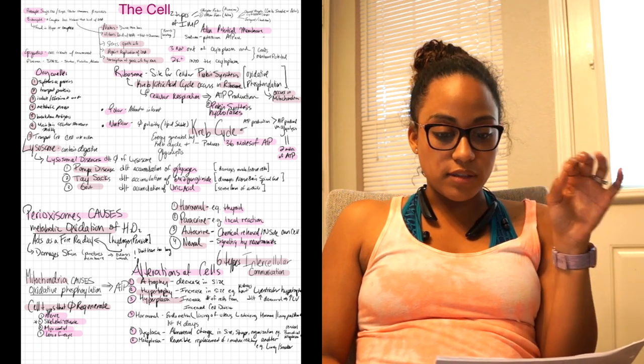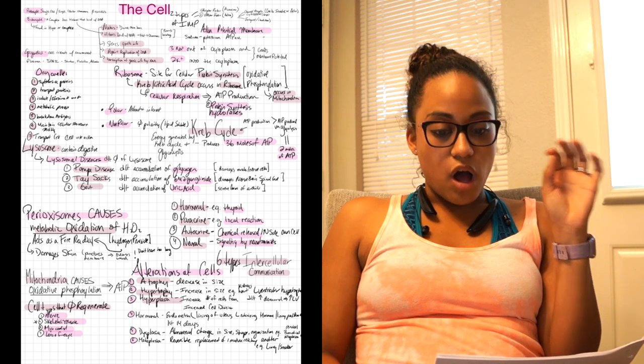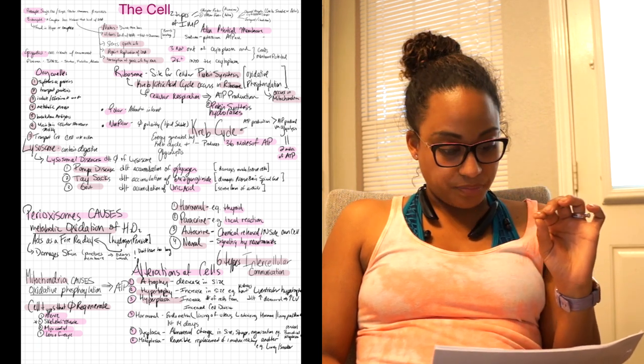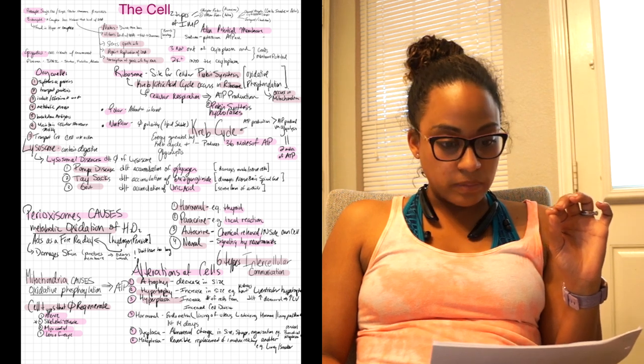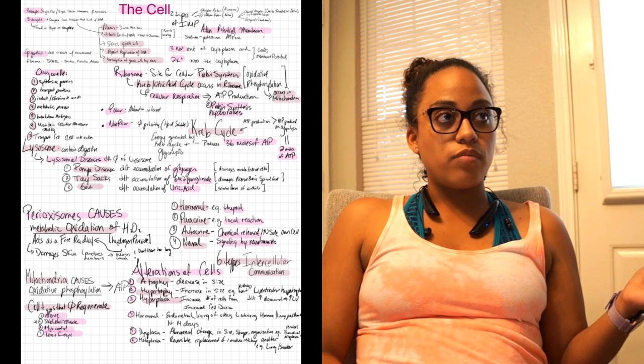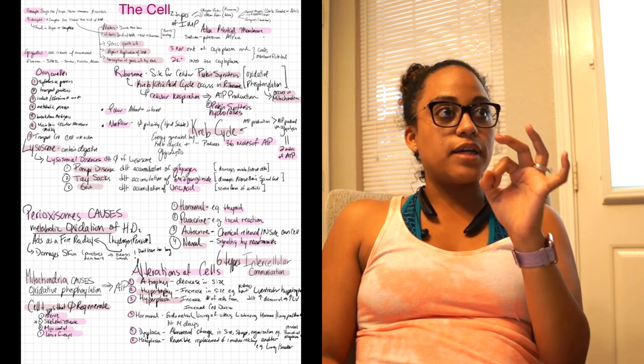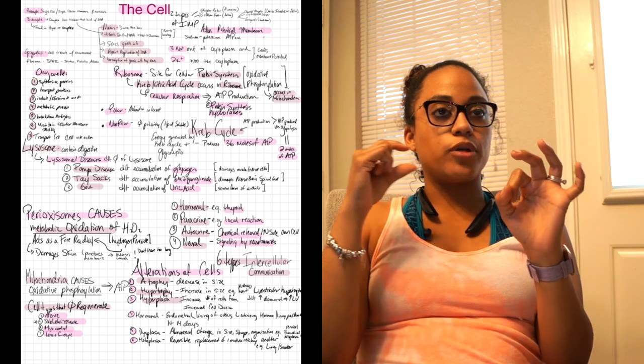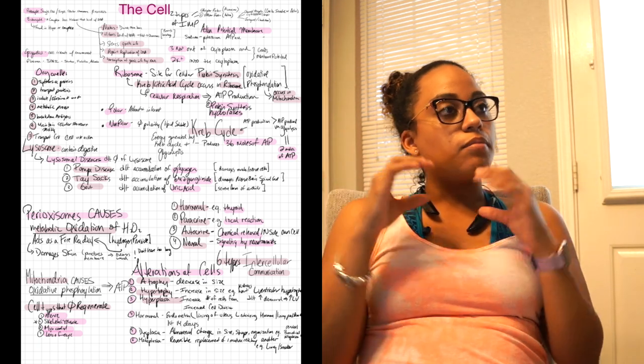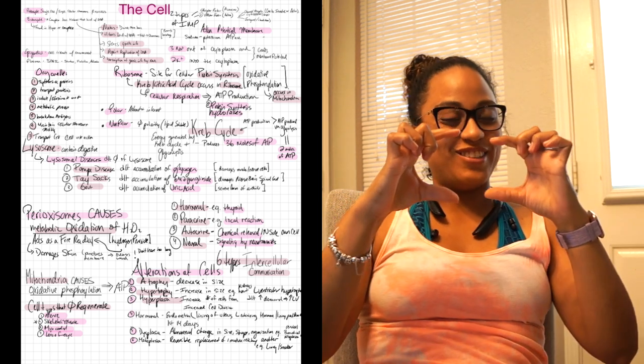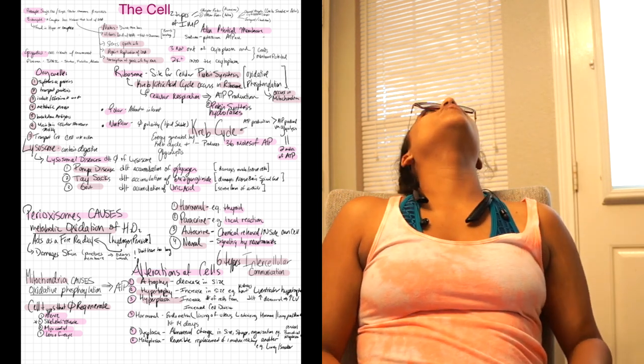So ribosome: site for cellular protein synthesis. Oxidative phosphorylation occurs in the mitochondria. The Krebs citric cycle occurs in the ribosome, that's where the Krebs cycle occurs, all those processes, but the actual production of ATP is in the mitochondria.